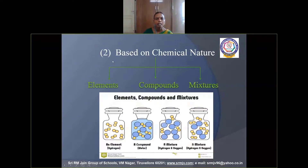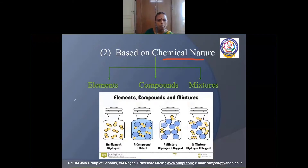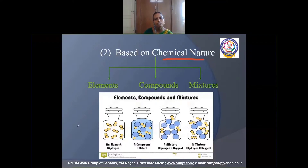Matter can also be classified into elements, compounds, and mixtures based on chemical nature. Elements are made up of the same kind of atoms. Examples: solids — gold, silver; liquid — mercury; gaseous — oxygen, hydrogen.